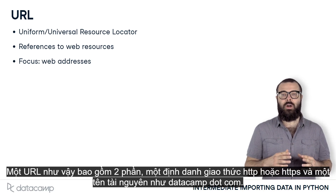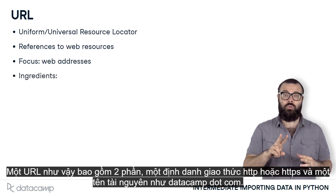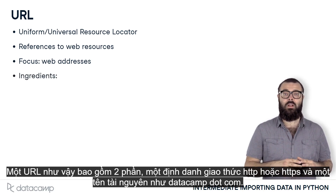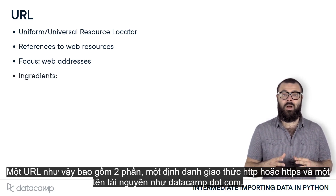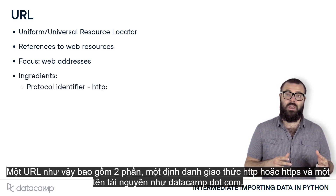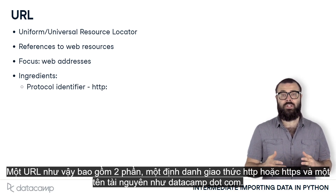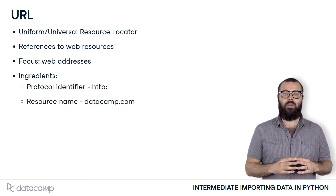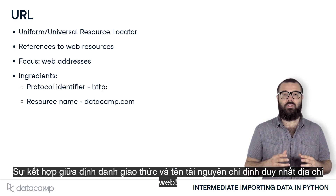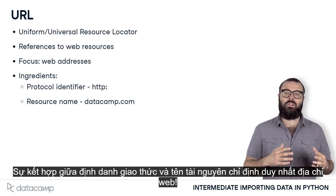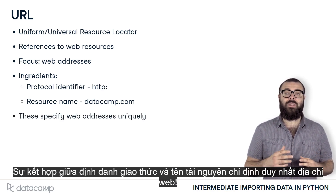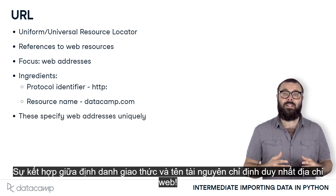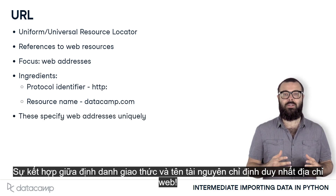Such a URL consists of two parts: a protocol identifier — HTTP or HTTPS — and a resource name, such as datacamp.com. The combination of protocol identifier and resource name uniquely specifies the web address.